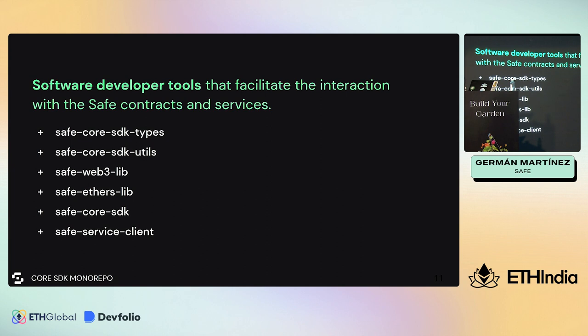Then we have the Safe Core SDK - the most important package in the monorepo. It requires one of the previous packages like Web3 or Ethers to provide the network connection, and you need to provide a Safe address to initialize it. If you don't have a Safe address, you can also deploy one with it. This package is all about interacting with smart contracts on-chain: getting owners, threshold, nonce, creating and preparing transactions, signing them, and executing them.